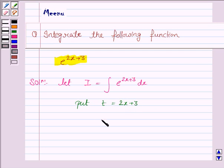So dt by dx is equal to 2, and this implies dt is equal to 2dx, and this implies dx is equal to dt by 2.